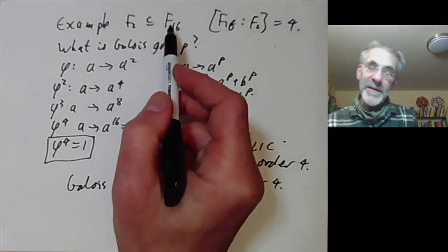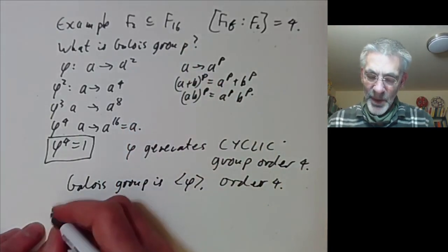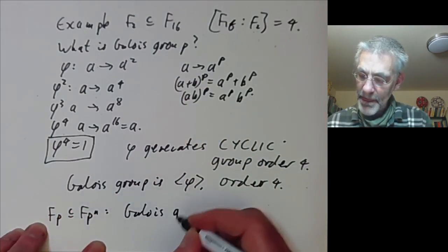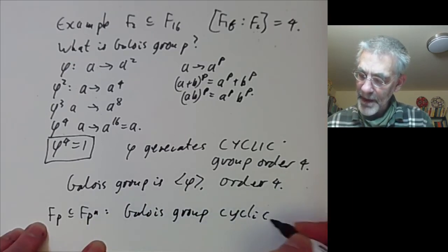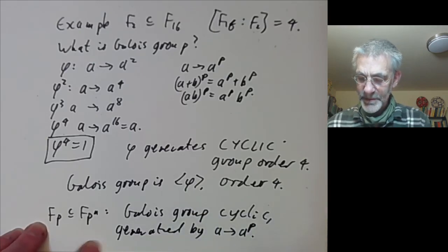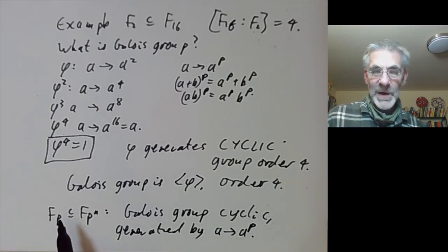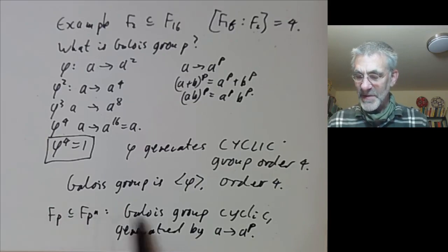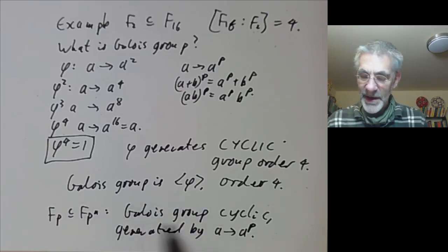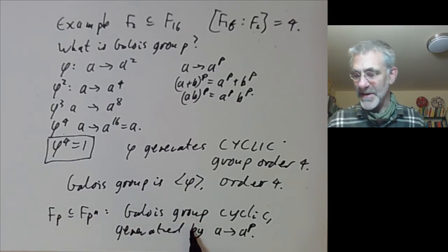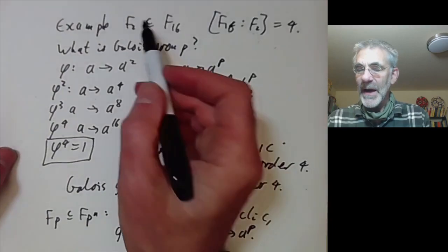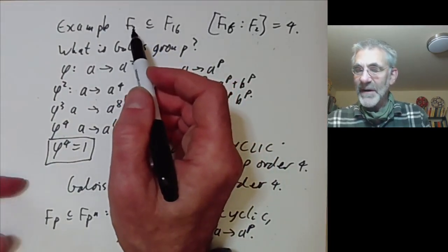There is nothing special about F₁₆ here. Similarly, for Fₚ contained in Fₚⁿ, the Galois group is cyclic generated by the Frobenius a ↦ aᵖ. This is one reason finite fields are easy to deal with: not only are all extensions of finite fields Galois extensions, but their Galois groups are cyclic, and cyclic groups are particularly easy to work with.